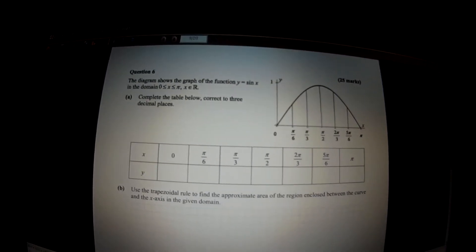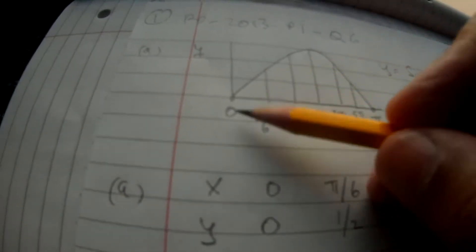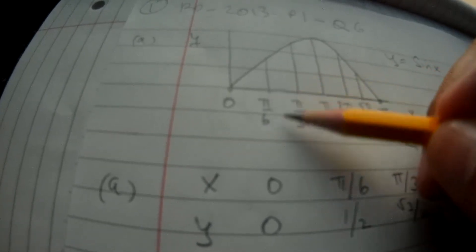Once we fill out the table, we can use the trapezoidal rule to find the approximate area of the region enclosed between the curve and the x-axis in the given domain. We have y = sin(x), going from 0 to pi over 6, pi over 3, pi over 2, 2pi over 3, 5pi over 6, and pi — it's going up in increments of pi over 6. So the h value there is pi over 6.